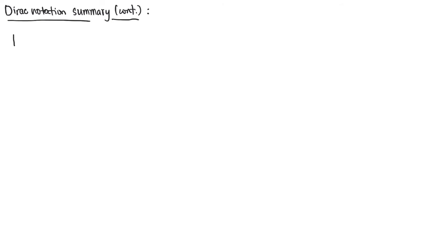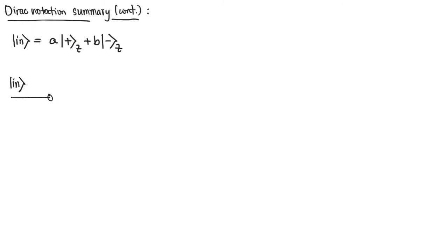In our previous example, we were able to write the input state as a linear combination of the z basis kets. That's perfectly fine if you're making a measurement with an SGA-z, because you can read off very easily the probabilities of getting a plus or minus measurement. But what if you were to feed this same input state into an x-analyzer? In that case, it wouldn't be so helpful to write the input state in terms of the z basis, because we're not measuring z.